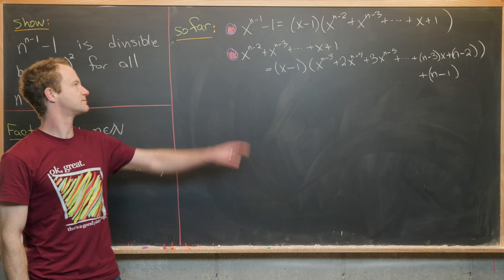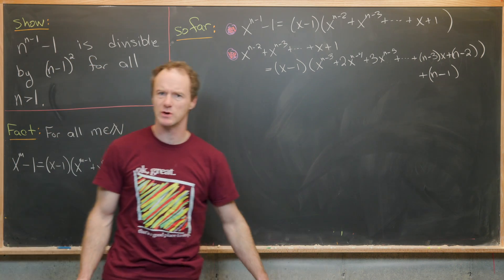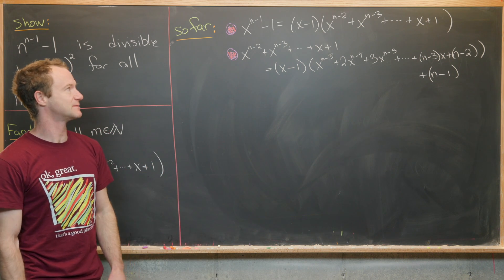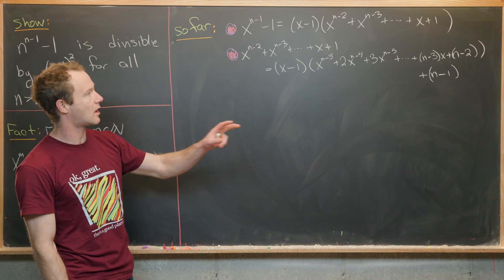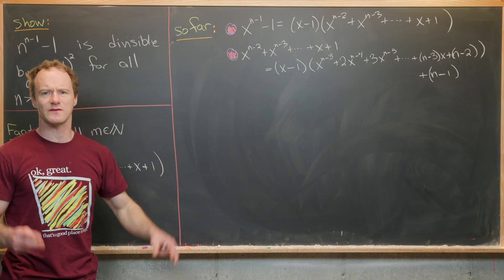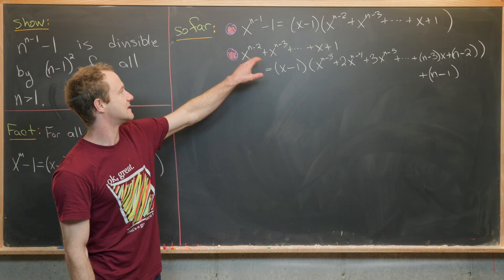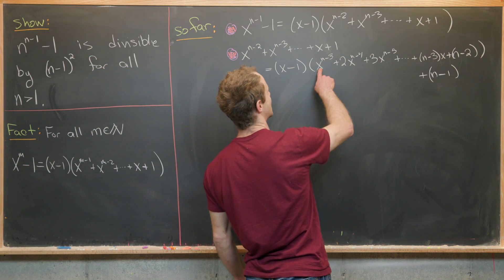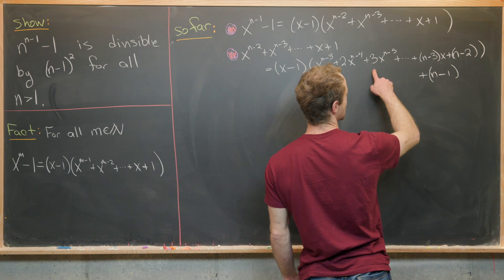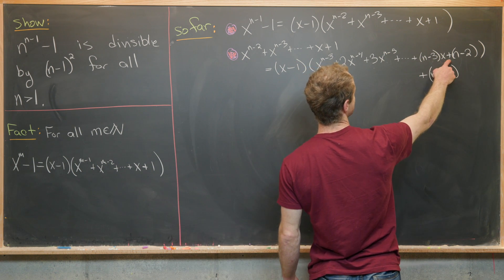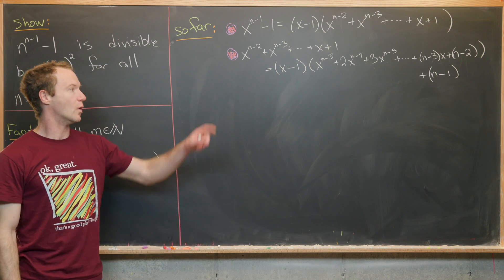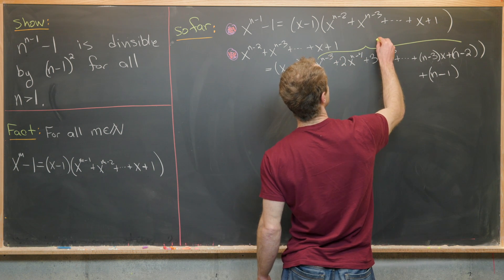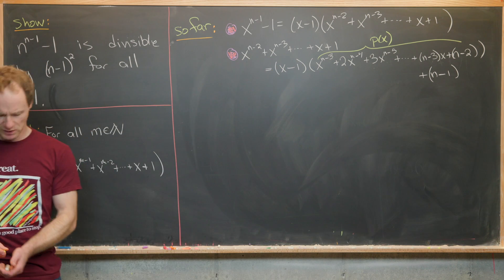Let's summarize the two facts we've developed. First, x to the n minus 1 minus 1 factors as x minus 1 times x to the n minus 2 plus all the way down to 1. Second, via polynomial long division, x to the n minus 2 plus x to the n minus 3, all the way down to x plus 1, equals x minus 1 times x to the n minus 3 plus 2x to the n minus 4 plus 3x to the n minus 5, all the way down to n minus 3 times x plus n minus 2, with remainder n minus 1. Let's call that quotient polynomial p of x.